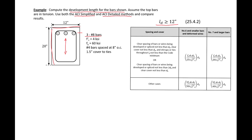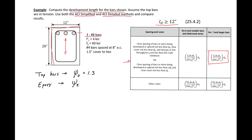Looking at our ACI table, we can see that we're in the first top category with number seven bars and larger, so this will be our simplified expression. We have top bars, so our top bar factor ψt is equal to 1.3. We don't have epoxy-coated bars, so our epoxy coating factor ψe is equal to 1.0.